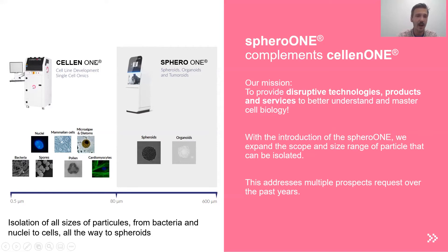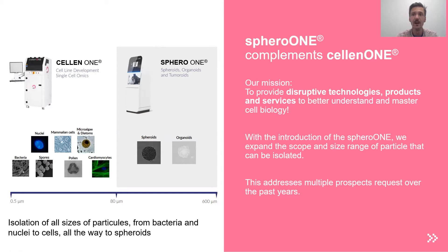You may know us from the Selenium, our single cell isolation dispensing technologies with applications in cell line development and single cell omics. With today's introduction of the Sphere 1, we can provide our customers a solution to isolate and dispense cellular aggregates, ranging from tiny bacteria, nucleic, and any types of cells, all the way to spheroids, organoids, and tumoroids.